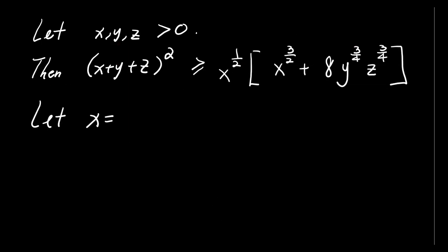Next, let's define new variables: x equal A to the power of 4 thirds, y equal B to the power of 4 thirds, and z equal C to the power of 4 thirds. This gives us the following inequality.